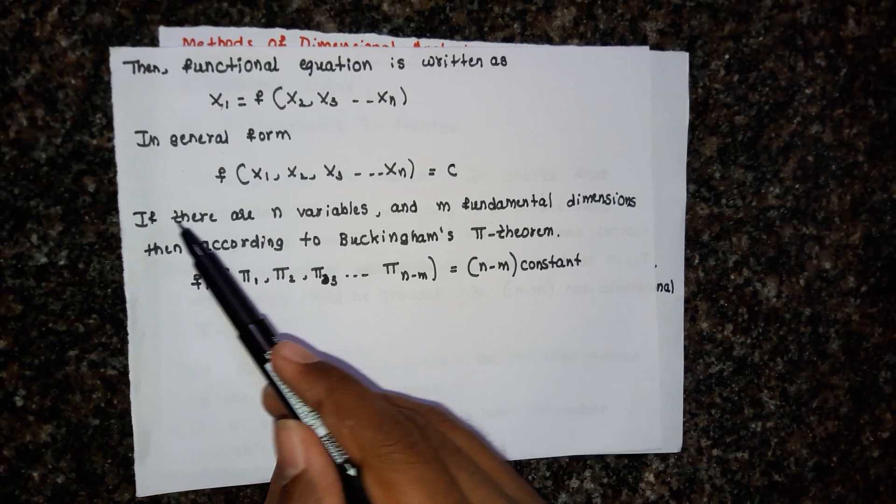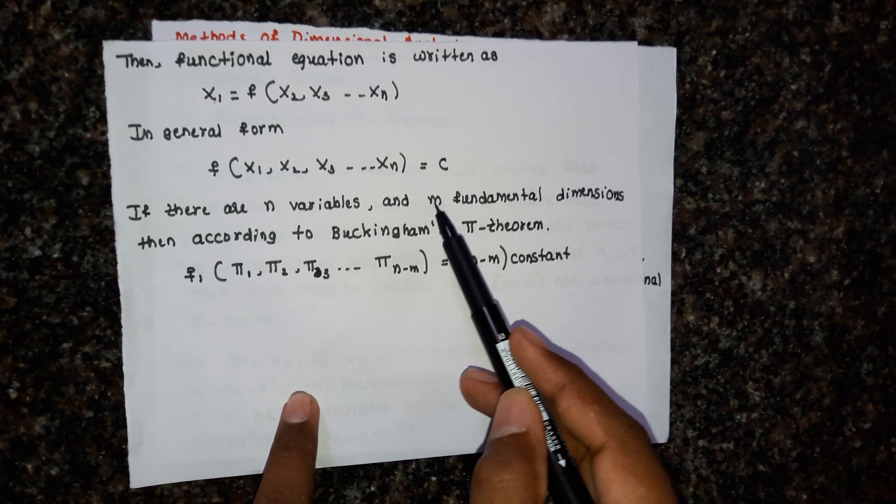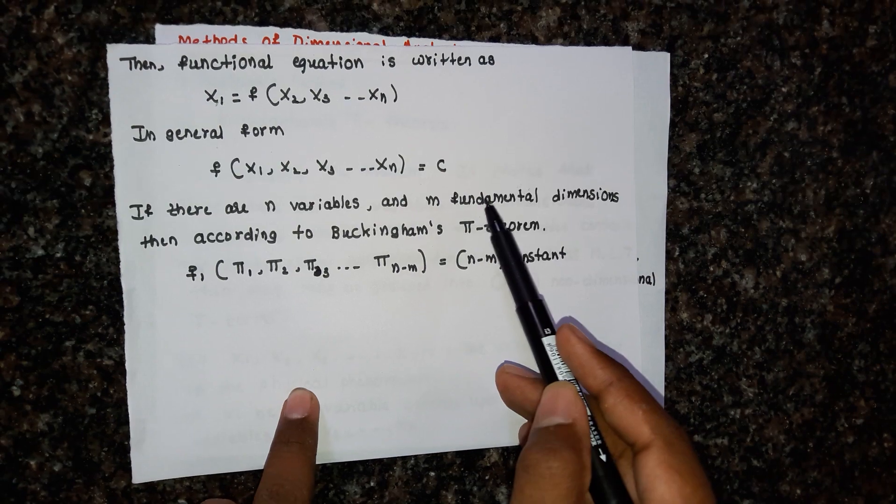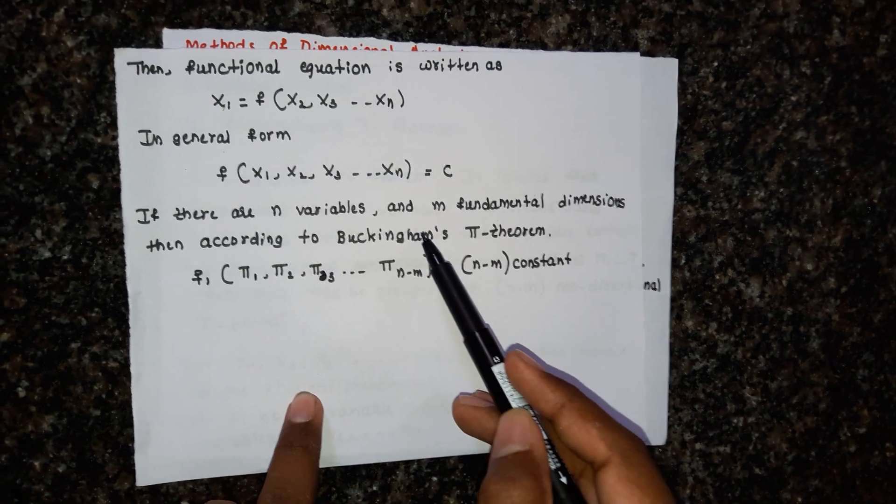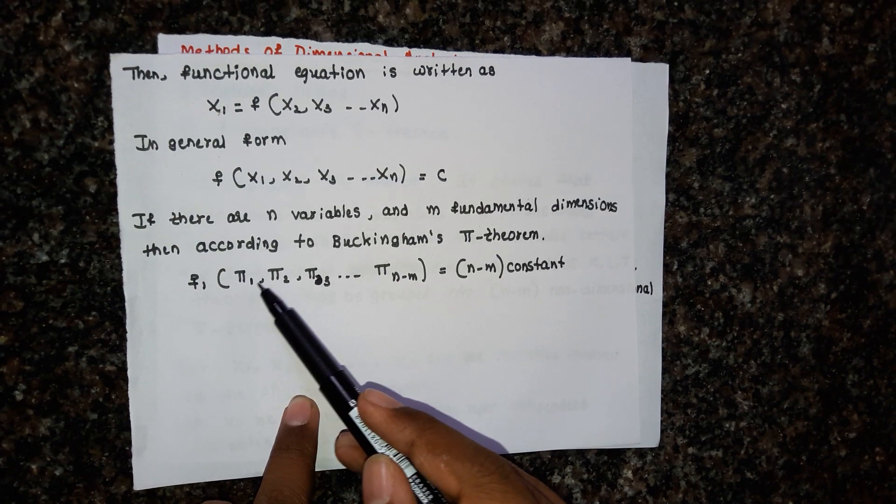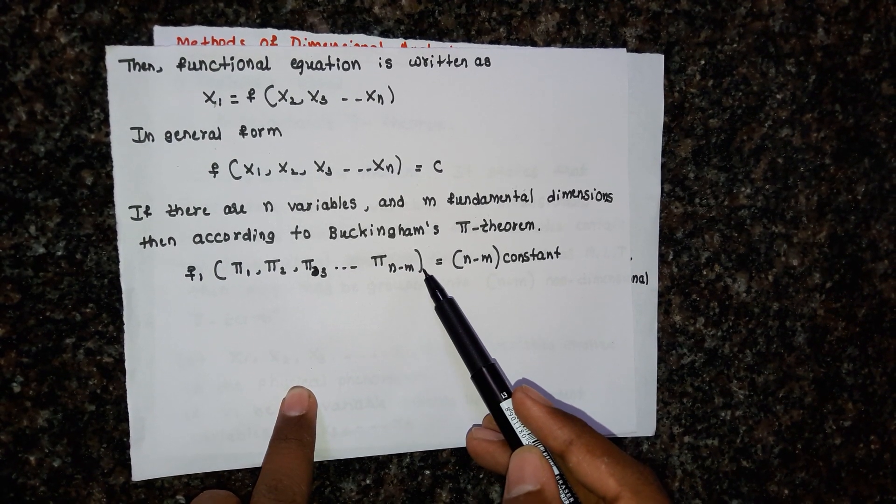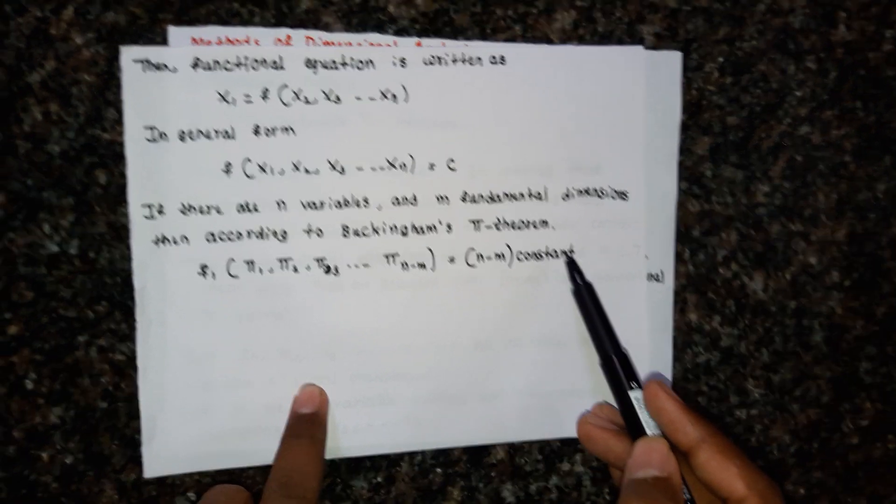According to Buckingham Pi theorem, if there are n variables x1, x2, x3, up to xn and m fundamental dimensions - mass, length, and time - then f1 of pi1, pi2, pi3, up to pi(n-m) equals a constant.